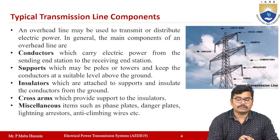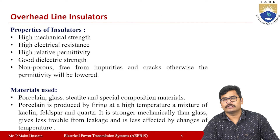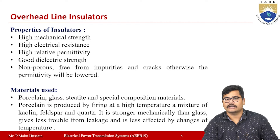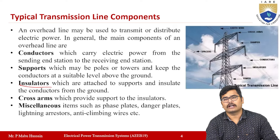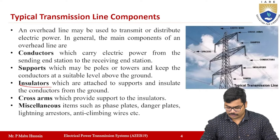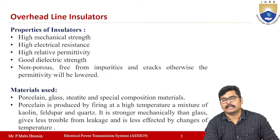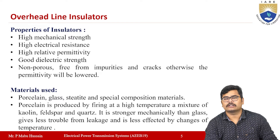Our main aim now is to discuss the different types of overhead insulators used in the transmission line system. The insulators are attached to the supports and insulate the conductors from the ground. To provide insulation between the live conductor and the supports, we must use insulators. For any material to be used as an insulator, it must possess certain properties.